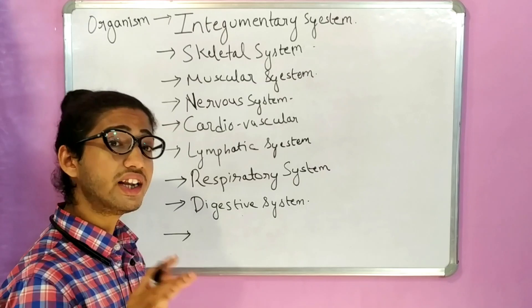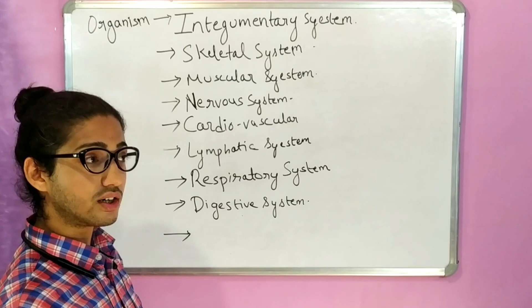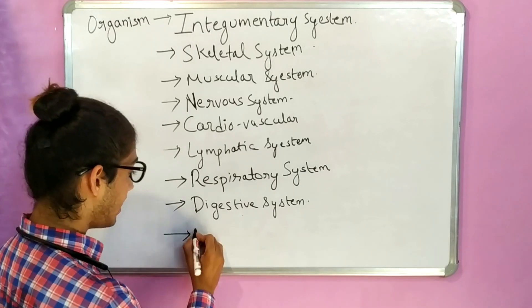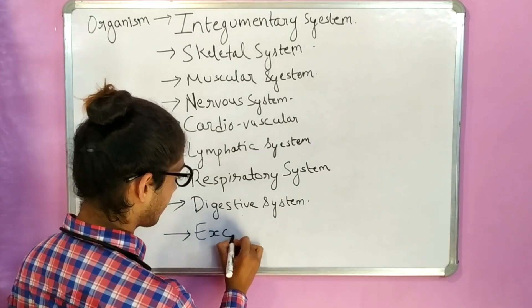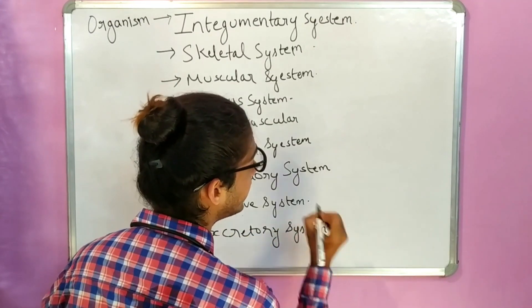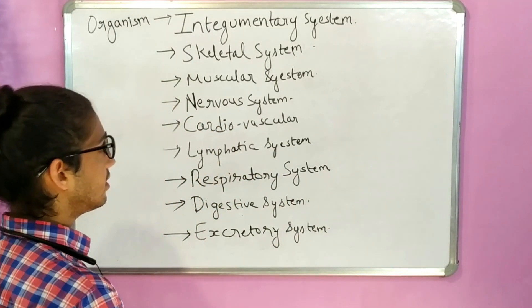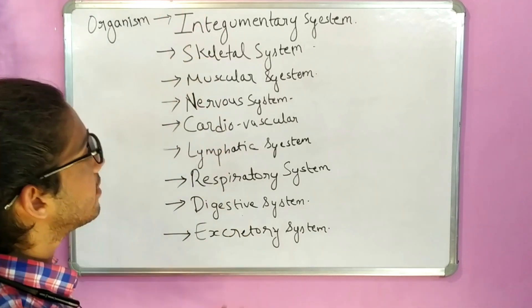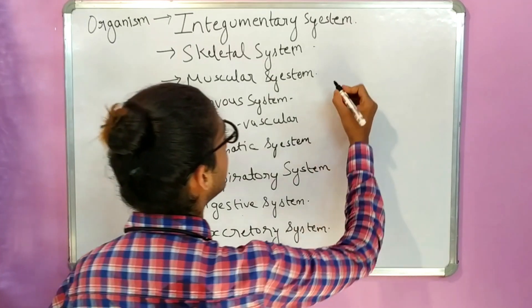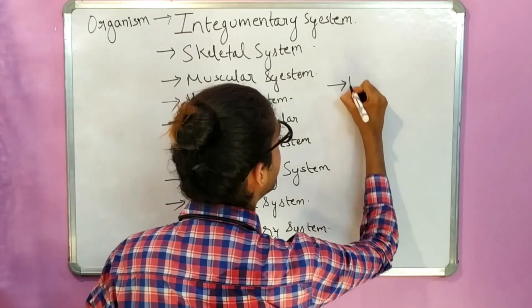The filtration of blood occurs because of the kidney, which is an organ present in the excretory system. The excretory system is the system that helps in filtration of blood throughout the body. Another very important system is the reproductive system, because it helps in giving birth to new life.